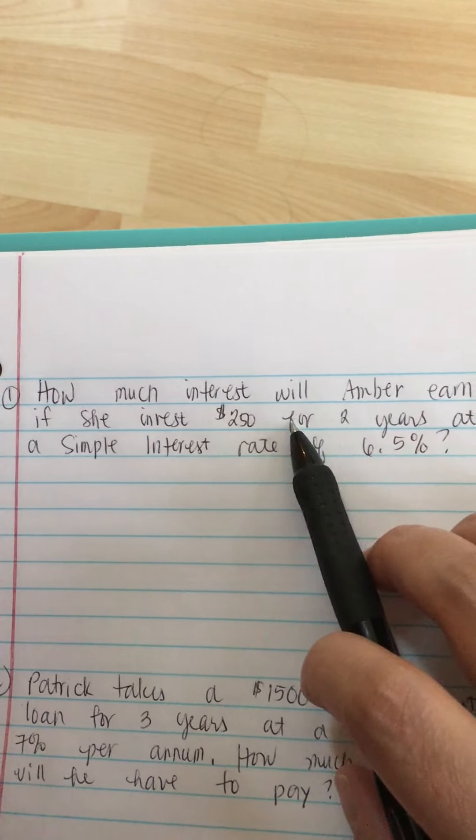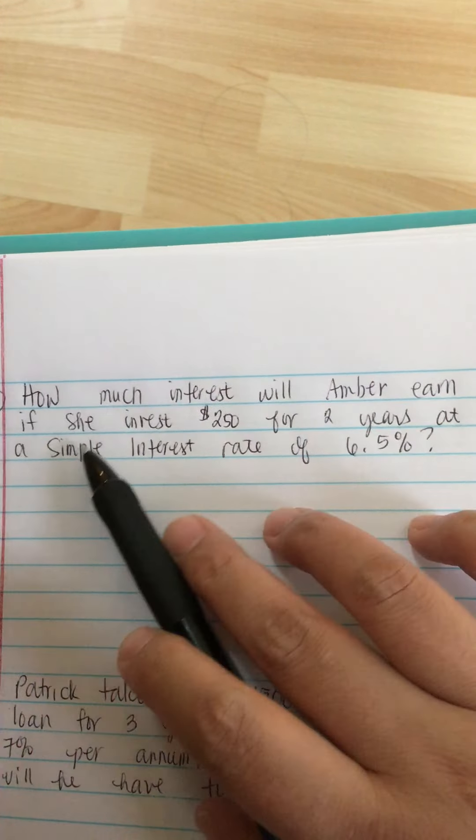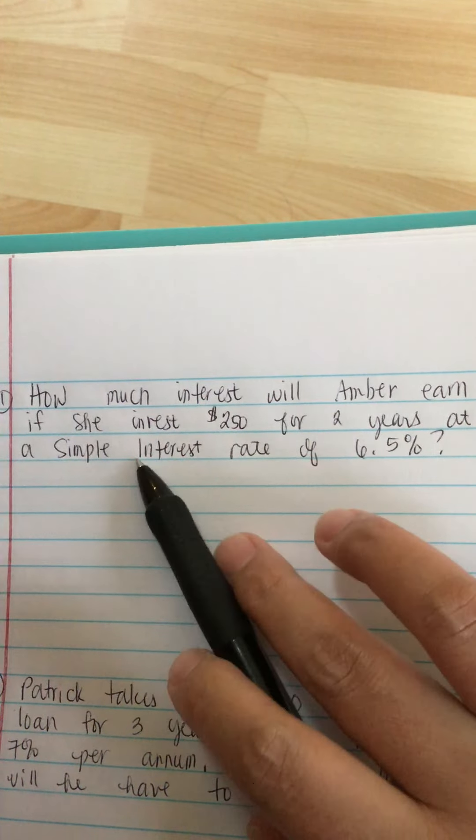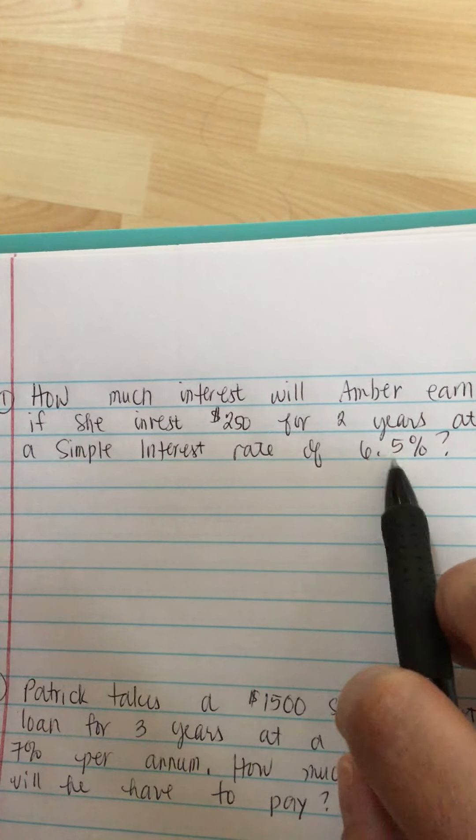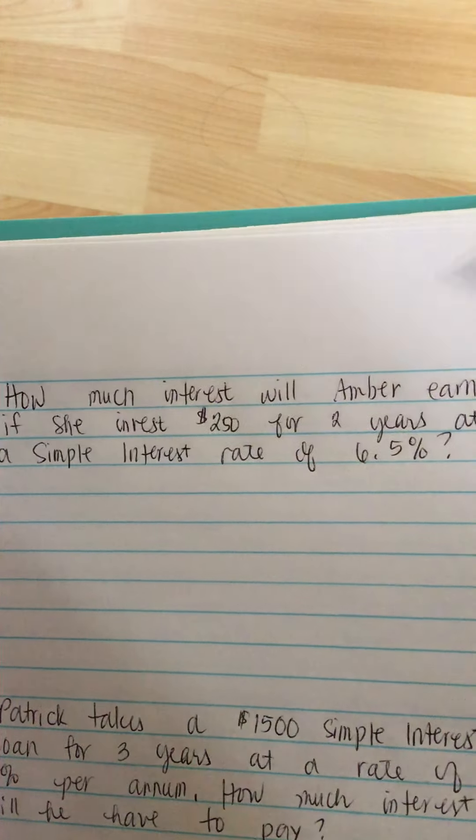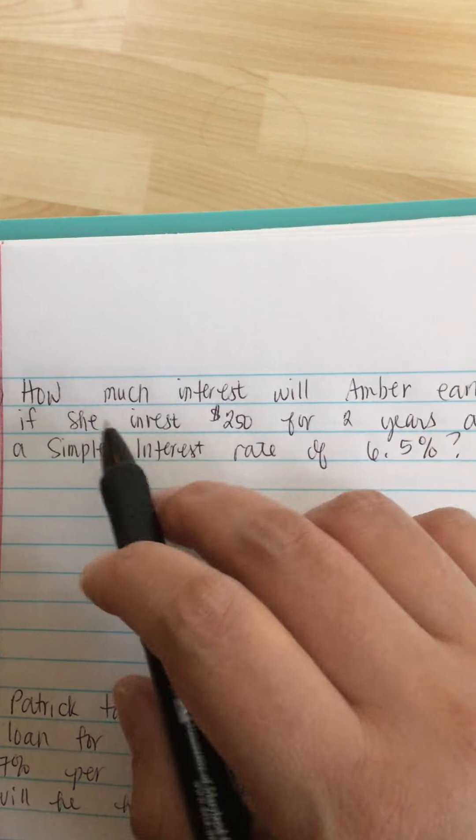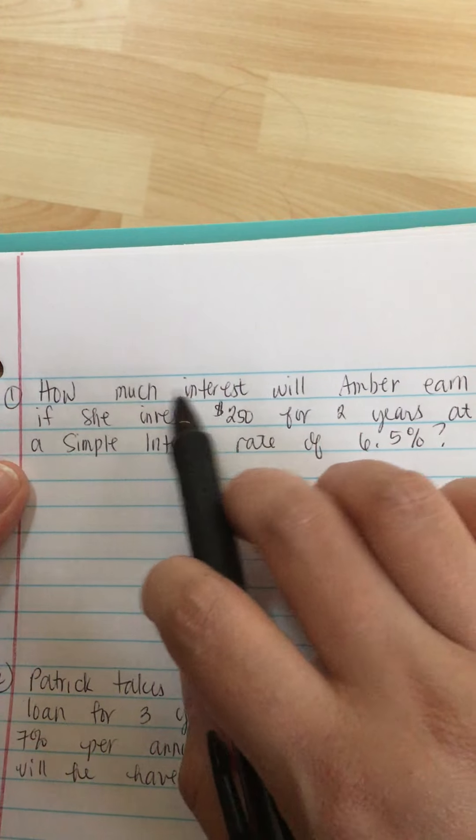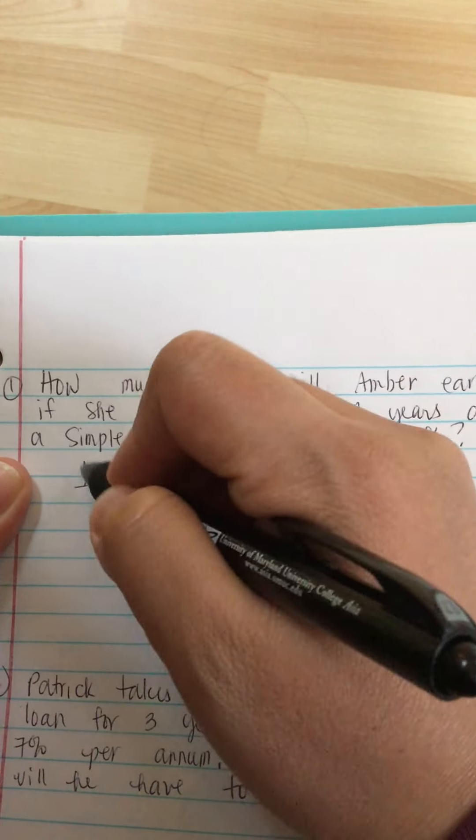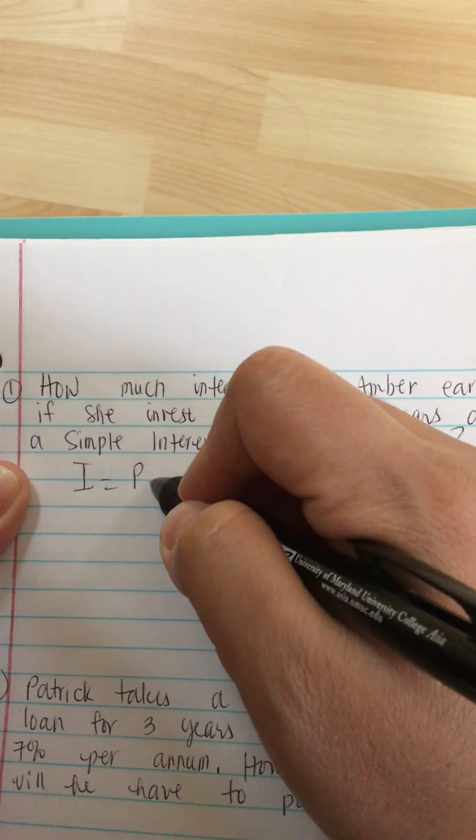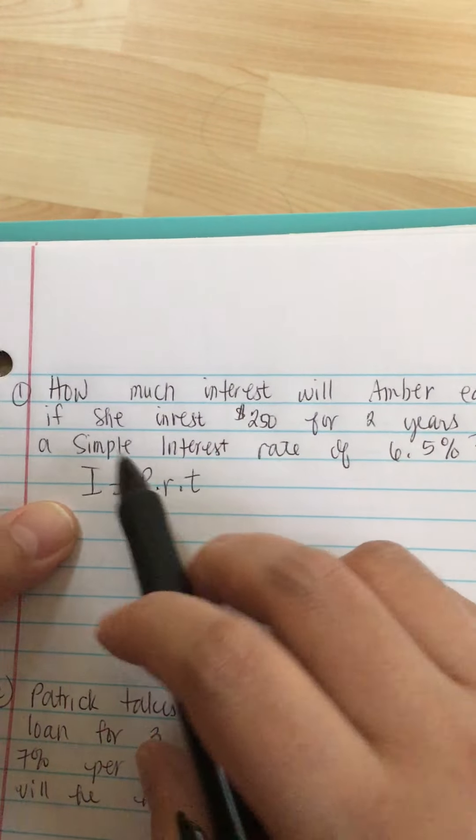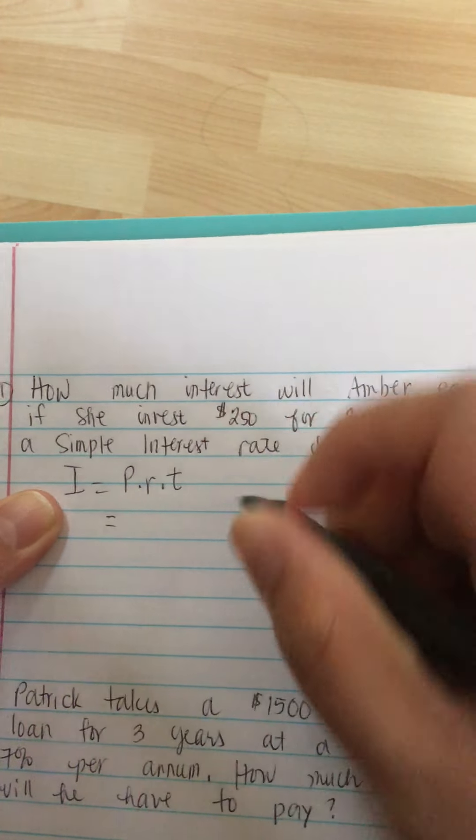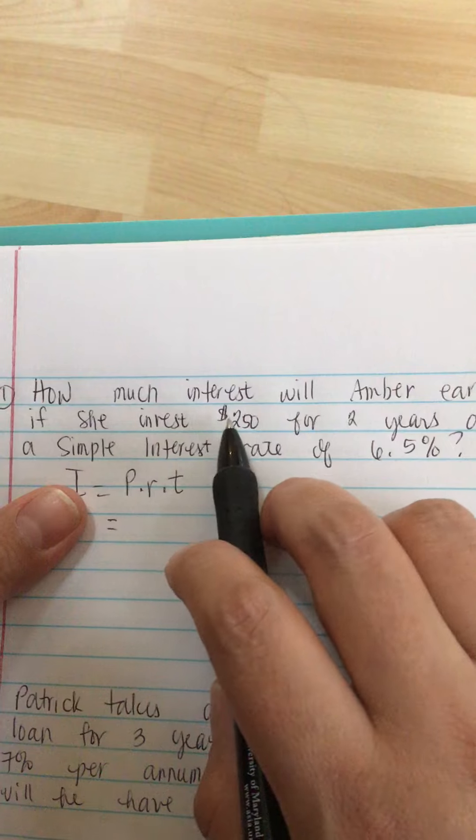How much interest will Amber earn if she invests $250 for 2 years at a simple interest rate of 6.5%? The formula for simple interest is I equals P times R times T. This will give you the interest that Amber will get if she invests $250.